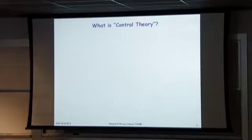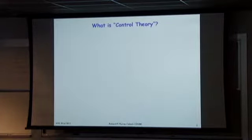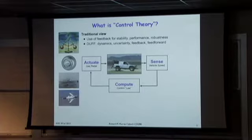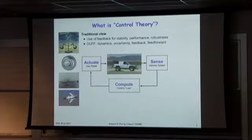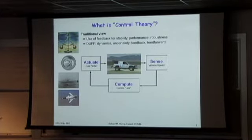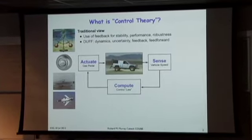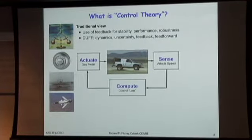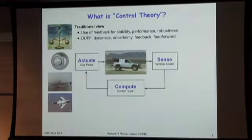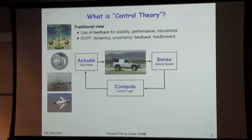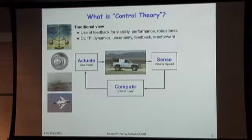What is control theory? The traditional view is that it's the use of feedback for stability, performance, and robustness. If you have a vehicle and want to regulate its speed, like cruise control, you sense the current speed, compare it to the desired speed—say 65 miles an hour—compute what to do if you're going too slow or too fast, how much to push the gas pedal, implement that computation, and then press the gas harder to make the car go faster. As you start going faster, you pull off on the gas. That's the classical feedback control loop.